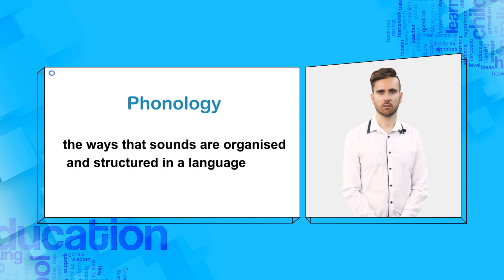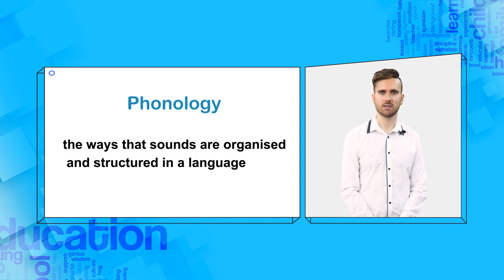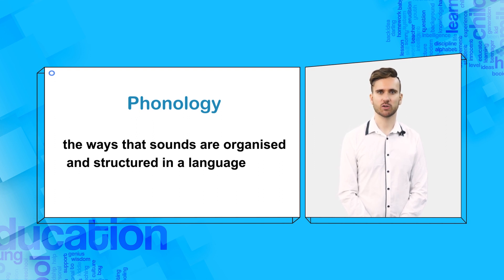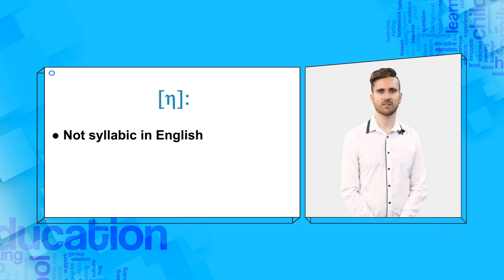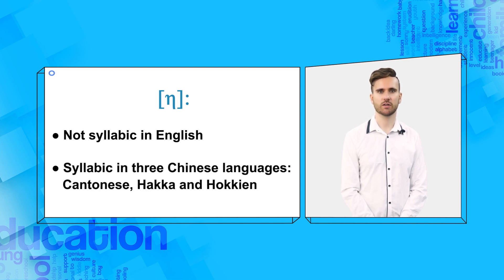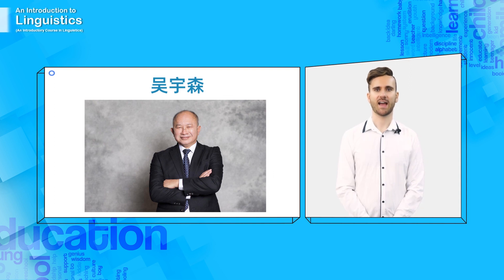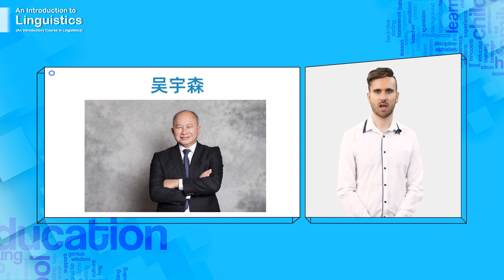We can define phonology as the study of the ways that sounds are organised and structured in a language. It aims to describe the system and patterns of these sounds, and the rules that govern their distribution. All languages have different phonological rules for the distribution of sounds. For example, the voiced velar nasal 'ng' cannot be the first sound of a syllable in English, or even be its own syllable. But in three southern Chinese languages — Cantonese, Hakka, and Hokkien — it can be syllabic. You may even know people with the family name Ng, such as the famous Hong Kong film director Ng Yu Sum. Thus, English and these Chinese languages have different phonological rules about the organisation of 'ng'.